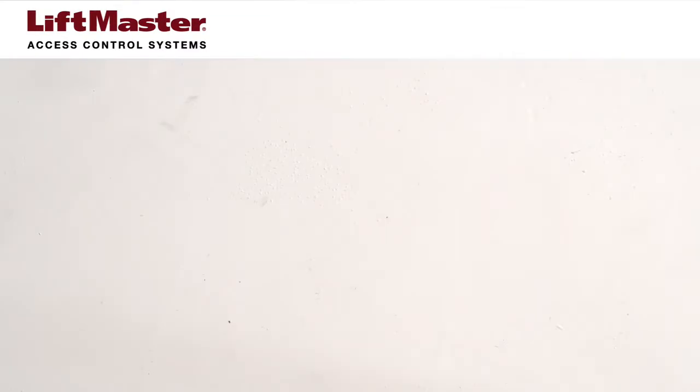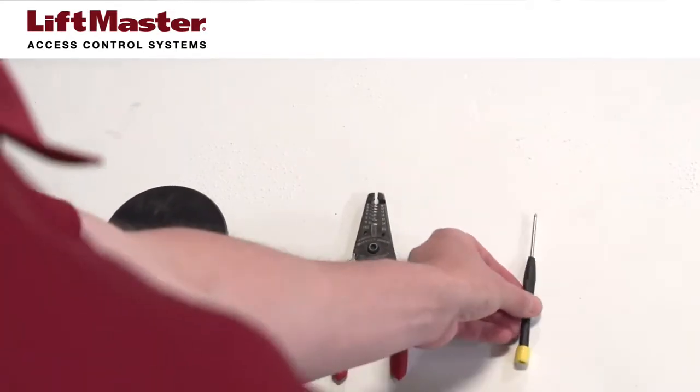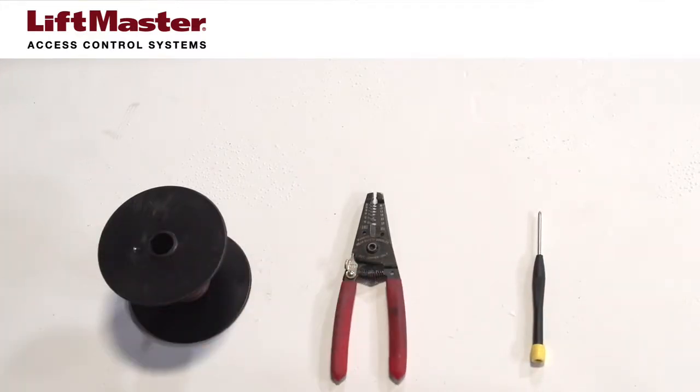You will need the following items: 18 to 24 gauge 2 conductor wire, a wire cutter stripper, and a screwdriver with a blade small enough to fit the terminal block screws.